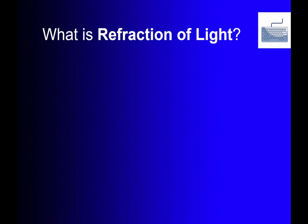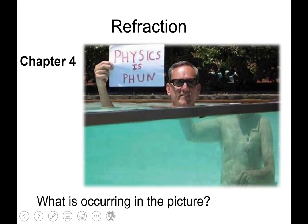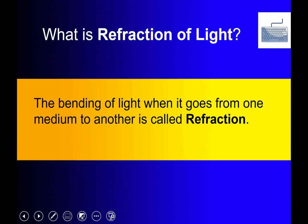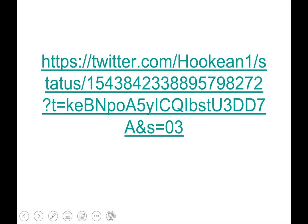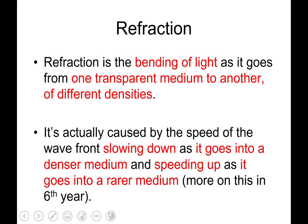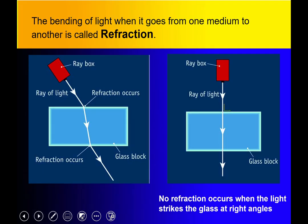So what is refraction of light? Refraction is the bending of light when it goes from one medium to another. In our first picture we could see light was being bent as it traveled from the water through the air to our eyes, which made it appear like this man's head was not on his body. The bending of light when it goes from one medium to another is called refraction.